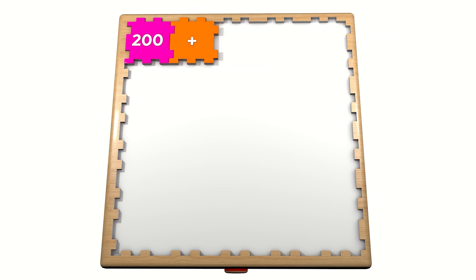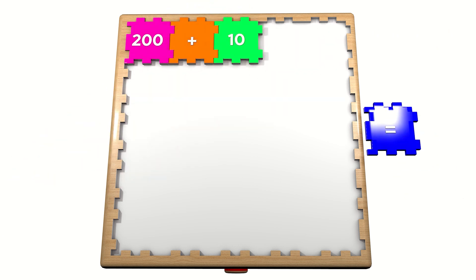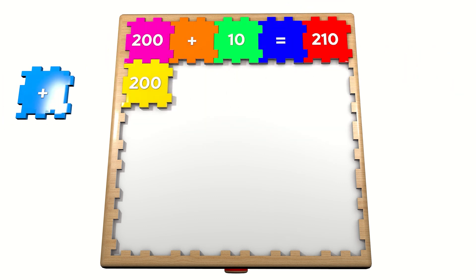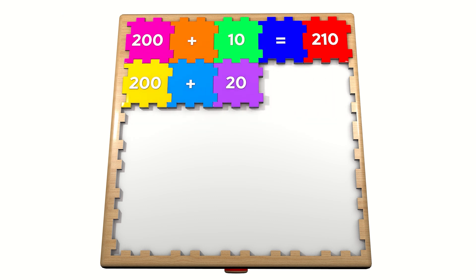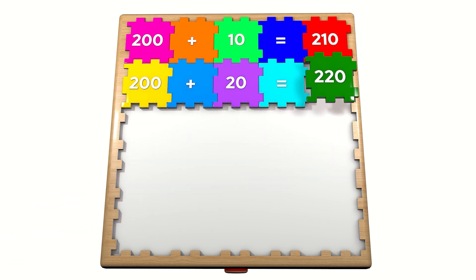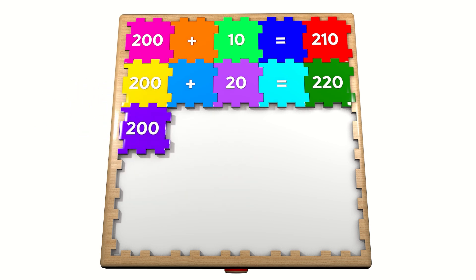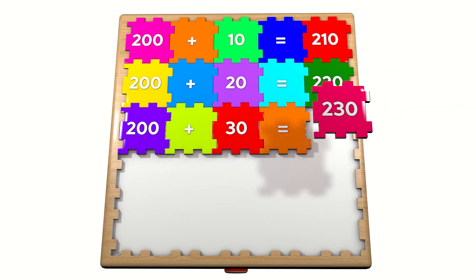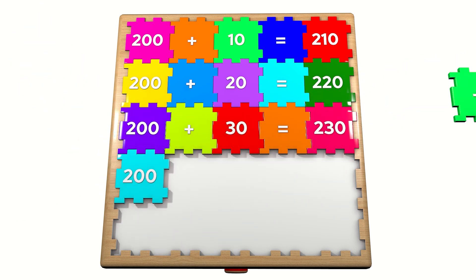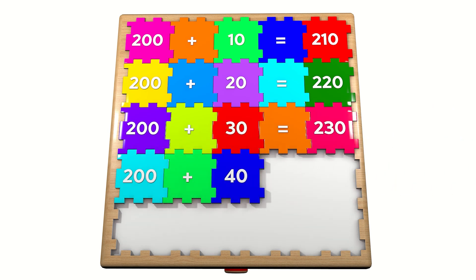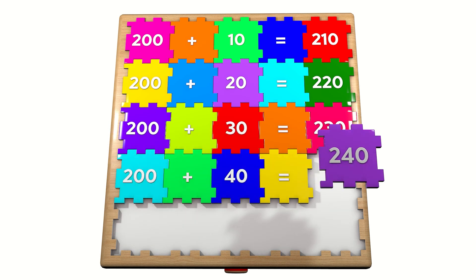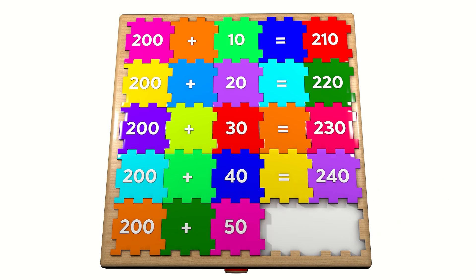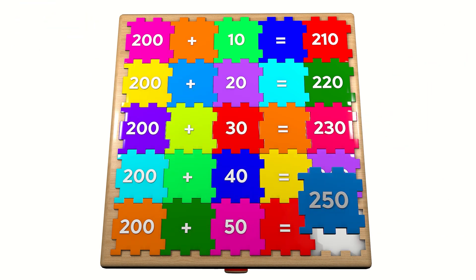200 plus 10 equals 210. 200 plus 20 equals 220. 200 plus 30 equals 230. 200 plus 40 equals 240. 200 plus 50 equals 250.